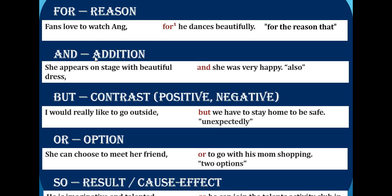AND is the same as addition — it adds information. Example: 'She appears on stage with a beautiful dress, and she was very happy.' AND gives the same meaning as ALSO. It is a glue word that connects two sentences as if you are saying the word ALSO.